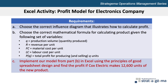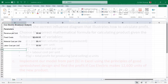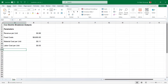Requirement C directs us to implement our model from Part B in Excel using the principles of good spreadsheet design, and find the profit if Cox Electric makes 12,600 units of the new product. Let's open up our downloaded Excel data file and complete the requirements.